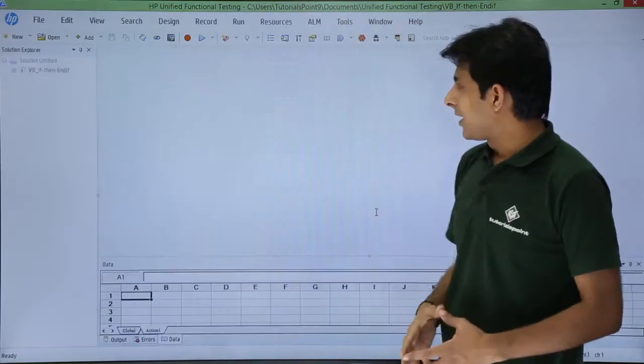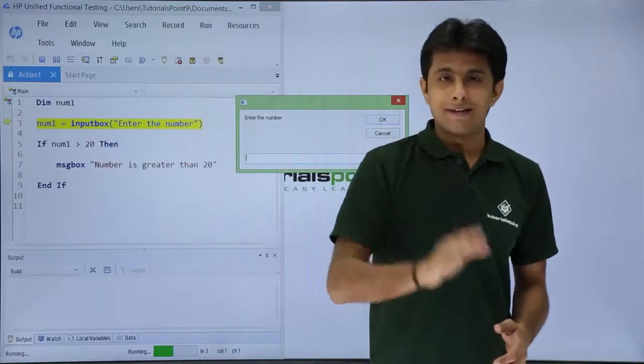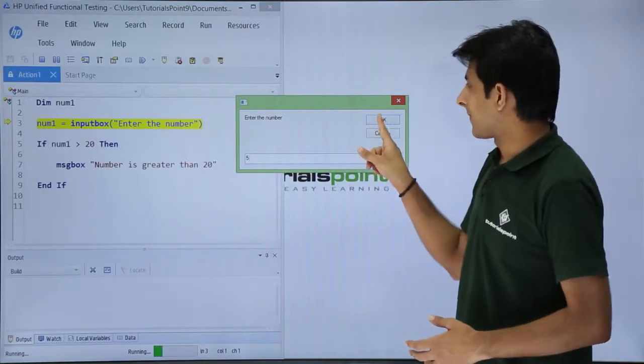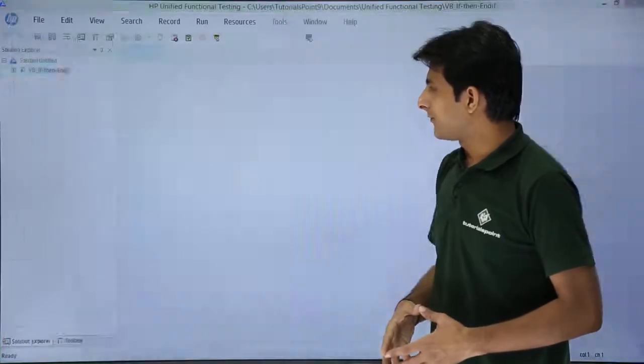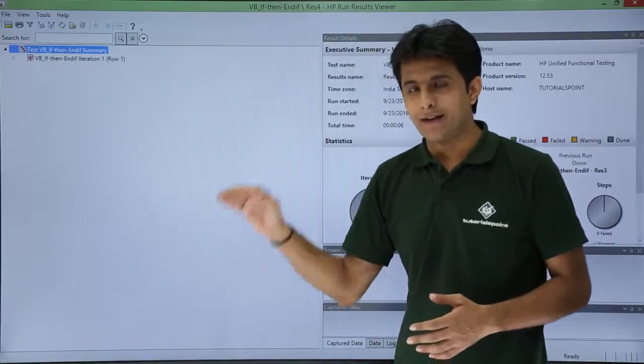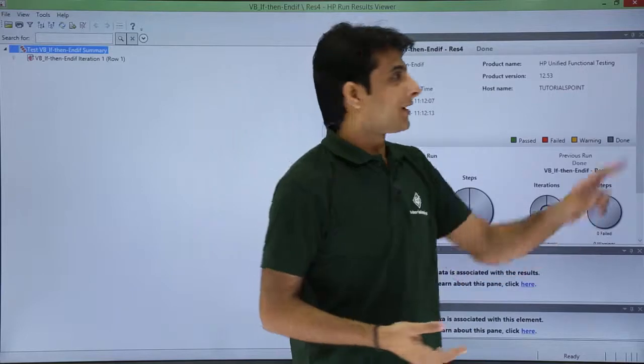I will click on run. Now I will try to enter a number less than 20. Let us say I will enter 5 and click okay. When I click okay, if you observe, it will not go inside the loop or inside the condition. It will directly come outside.